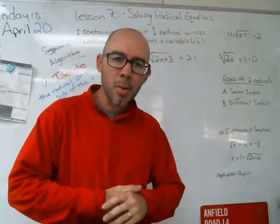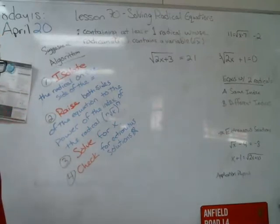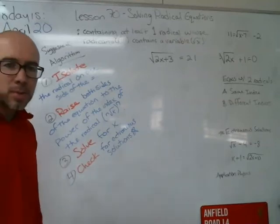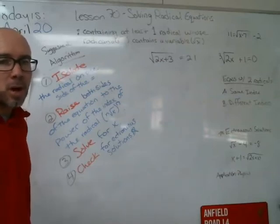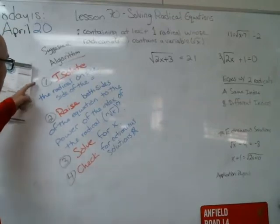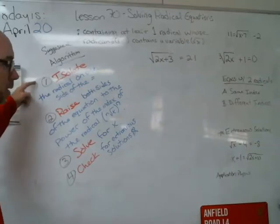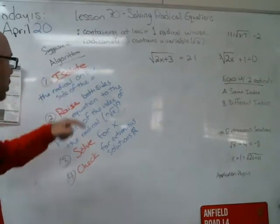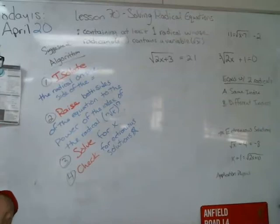Here's what you need to write down — a four-step process. I usually don't like algorithms but I'm going to give you one today to walk through these problems. It's a suggested algorithm, meaning a step-by-step process to get to the solutions. Number one: isolate the radical — the thing with the square root or cube root symbol — on one side of the equation.